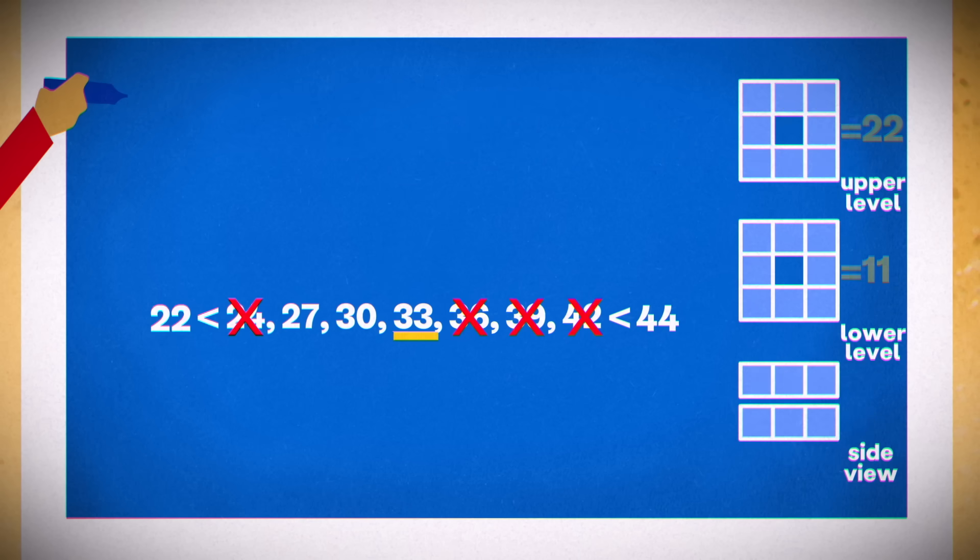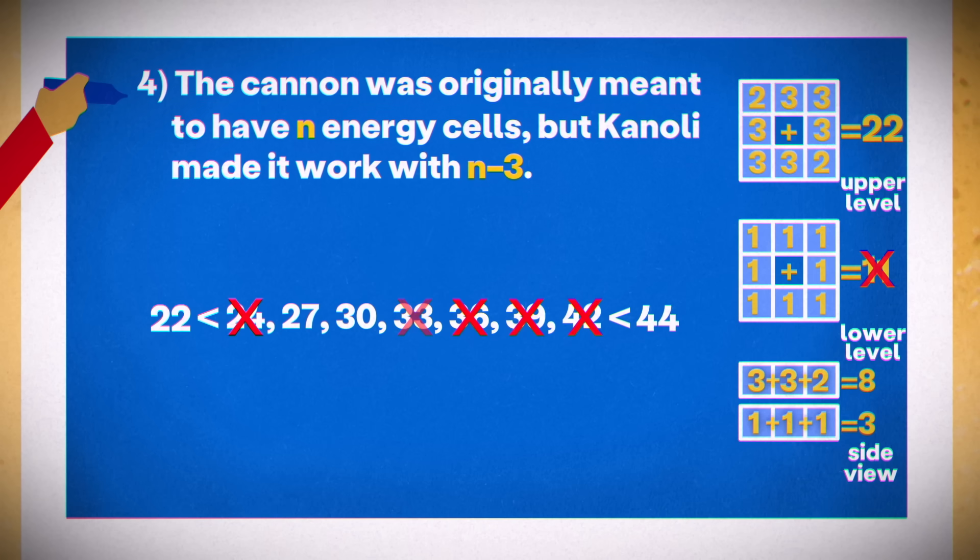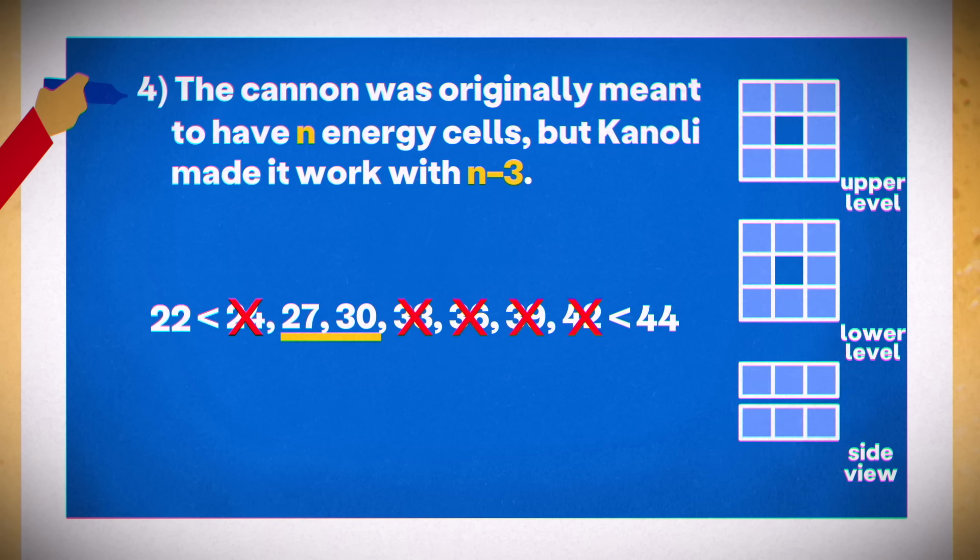What about 33? We know we don't want any sides with all threes, so we can place twos at opposite corners of the upper level. Now we have eight of 11 cells per side. So we could place exactly one cell in each lower chamber, but that would fall short of the lower level's required 11. That leaves only two options, 30 and 27, which must work by process of elimination.